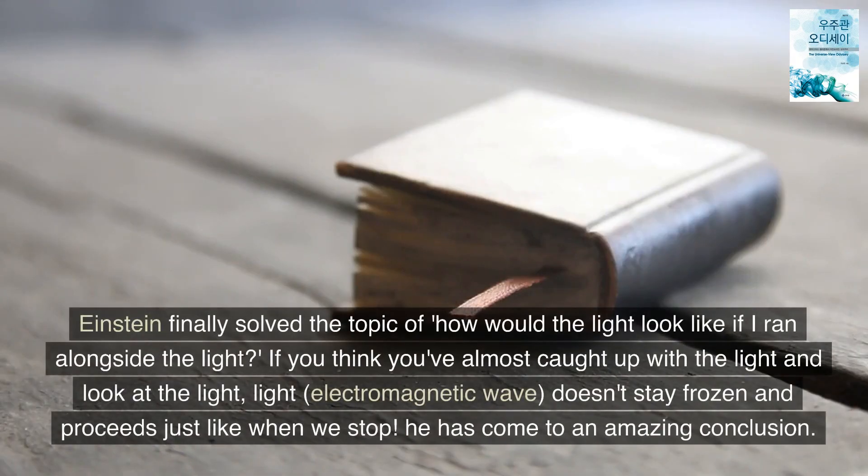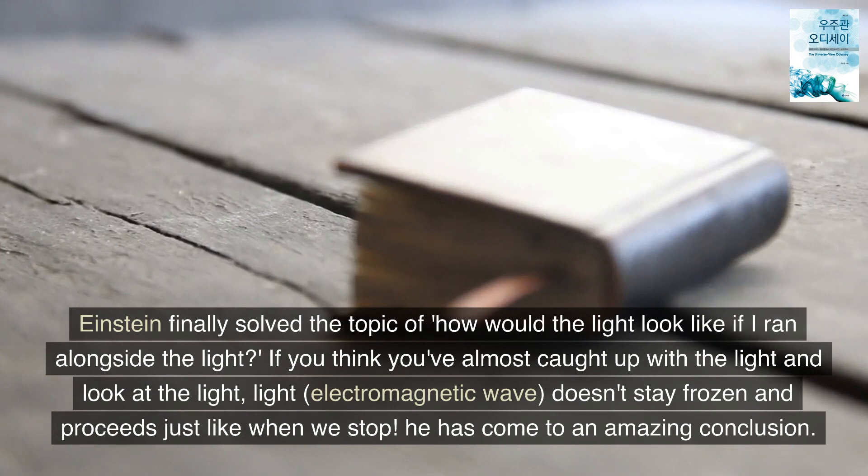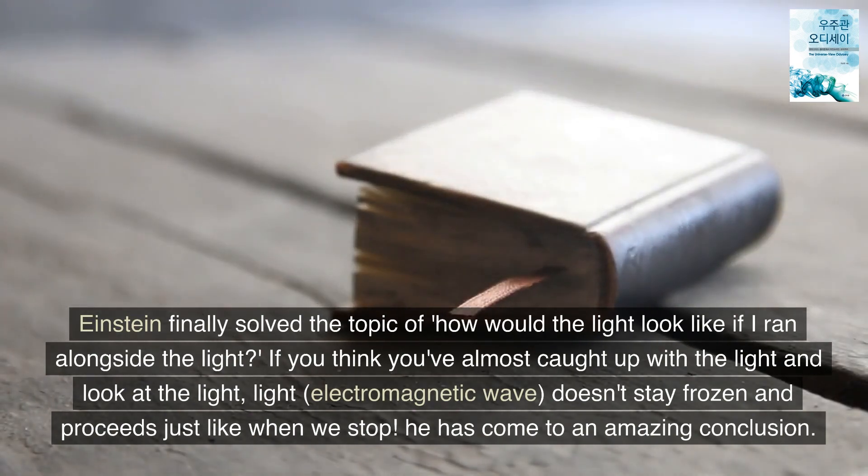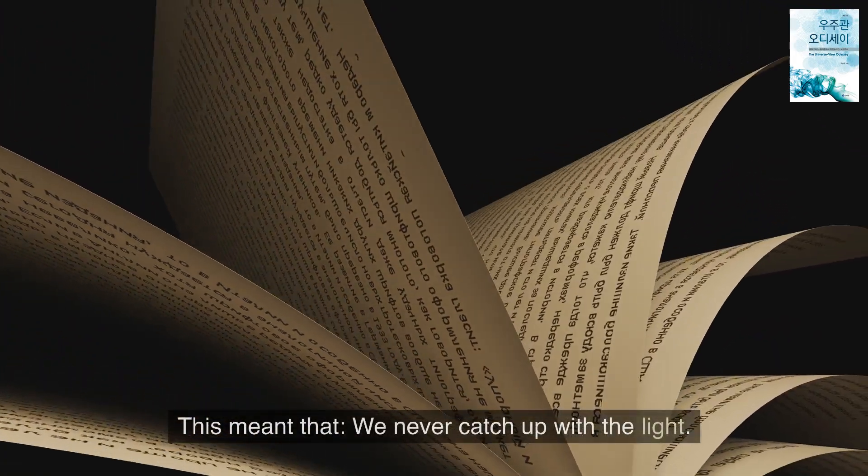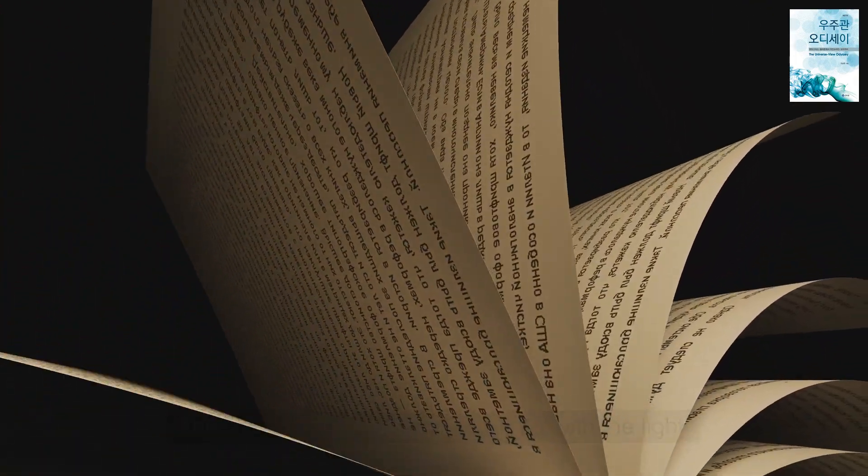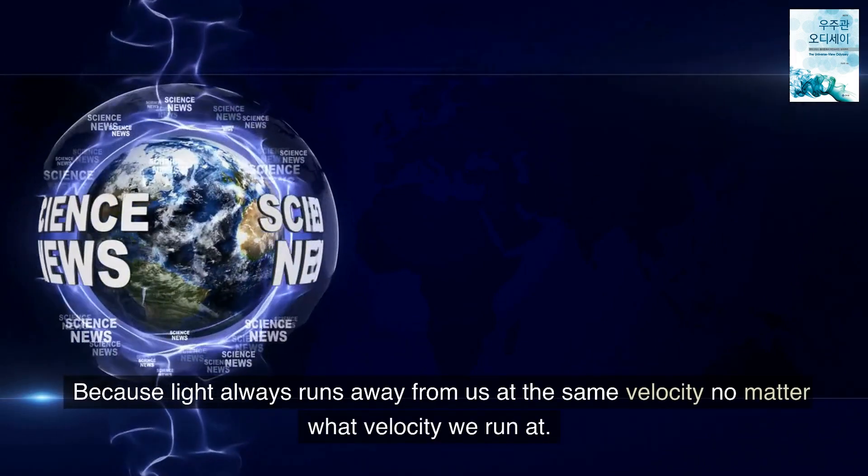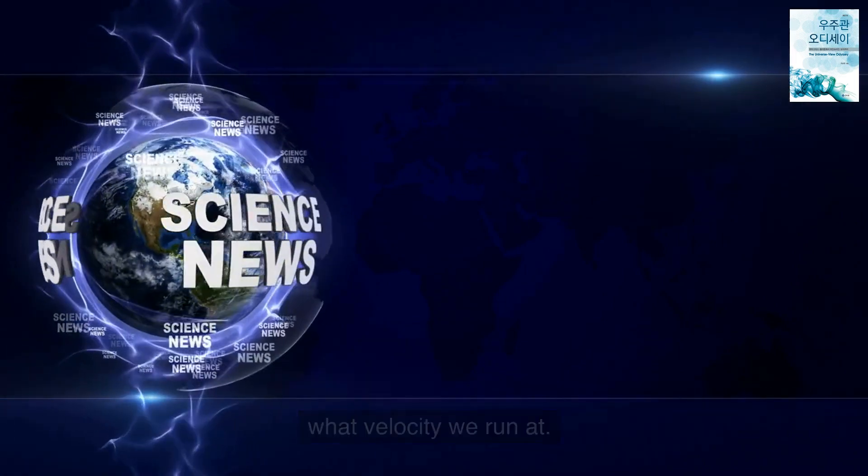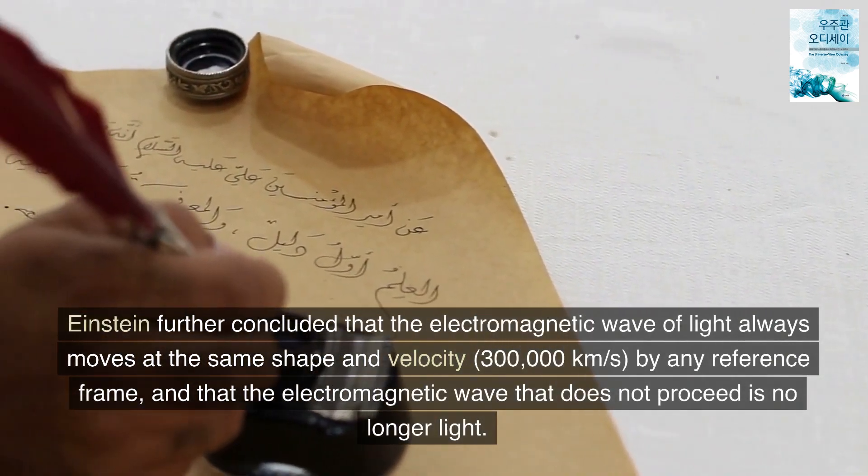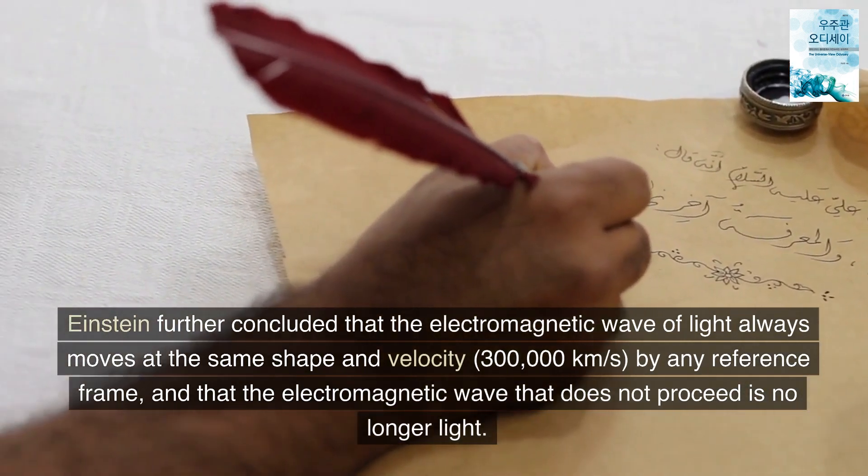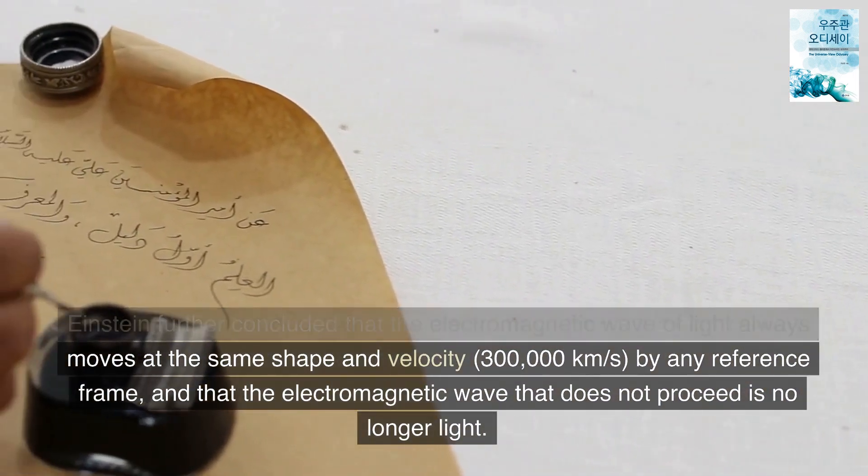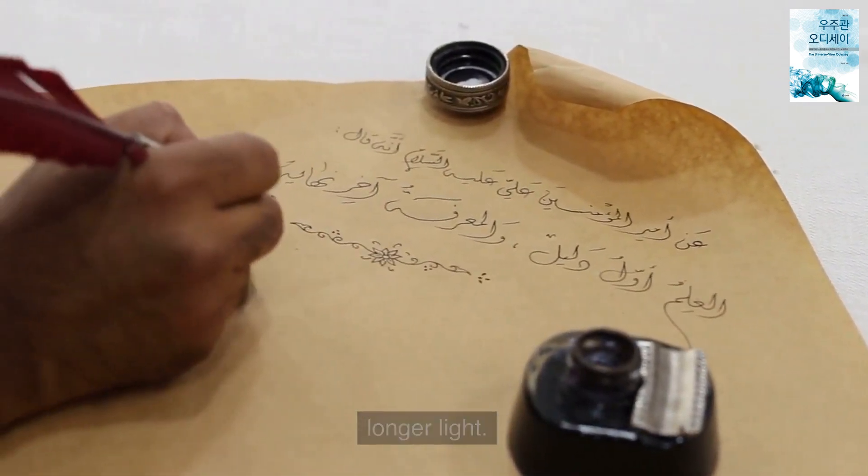Einstein finally solved the topic of how would the light look like if I ran alongside the light. If you think you've almost caught up with the light and look at the light, the electromagnetic wave doesn't stay frozen and proceeds just like when we stop. He has come to an amazing conclusion. This meant that we never catch up with the light, because light always runs away from us at the same velocity no matter what velocity we run at. Einstein further concluded that the electromagnetic wave of light always moves at the same shape and velocity, 300,000 kilometers per second, by any reference frame, and that the electromagnetic wave that does not proceed is no longer light.